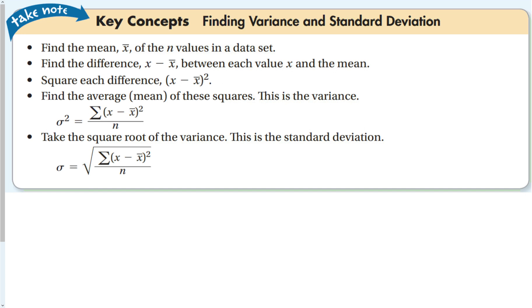Then we find the average, the mean, of these squared numbers. That number, when we find all that, is the variance.